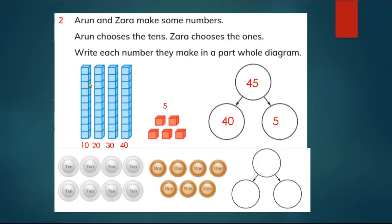You have to write the number. So here is 10, 20, 30, 40. So here is 40. This is Arun's number because she chooses tens. And Zara chooses ones. Here is 5. So 40 tens and 5 ones make 45. So we made two numbers. Five ones and four tens make 45.